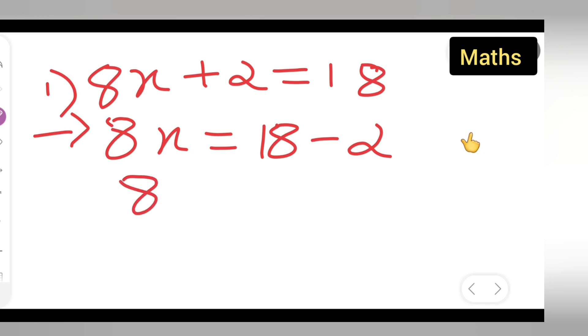So what you are going to get is 8x is equal to 18 minus 2, which will give you 16.